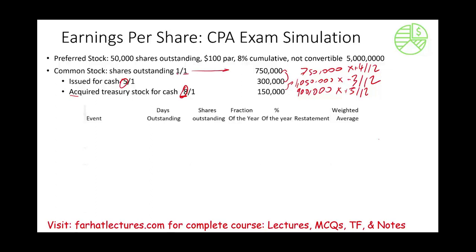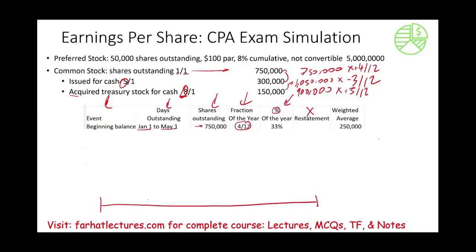This is the basic idea. Let's look at it in a more formal way using a table with columns: event, time outstanding, shares outstanding, fraction of year, and percentage. We're ignoring restatement since there's no stock dividend or stock split in this example. Starting January 1st to May 1st: 750,000 shares for 4/12 of the year, which is about 33%. The weighted contribution is 750,000 times 33% = 250,000 shares.